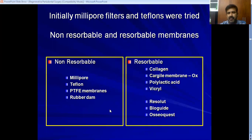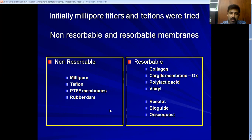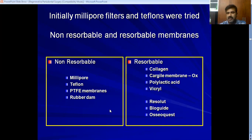Different types of GTR membranes are available, classified as absorbable and non-absorbable membranes. The first used membranes were millipore filters, then PTFE (Teflon) — these are non-absorbable. The problem with non-absorbable membranes is that after about three to four weeks, a second surgery under local anesthesia is needed to remove them. So now we use absorbable membranes — mostly collagen-type membranes. All membranes serve the same function: prevent epithelium from migrating into the wound area and create space for the periodontal tissues to regenerate.